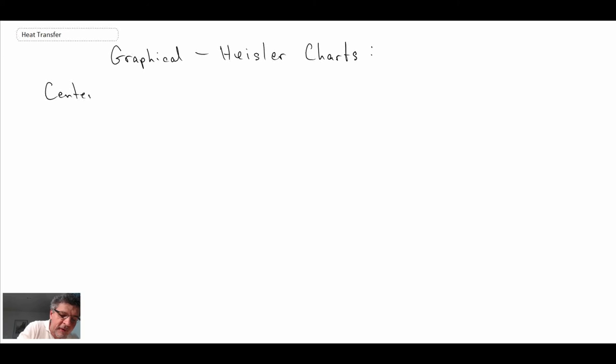First of all, we start with our centerline. And you'll have a plot of theta naught, that is at the centerline divided by theta initial. And that's going to be plotted as a function of the Fourier number.